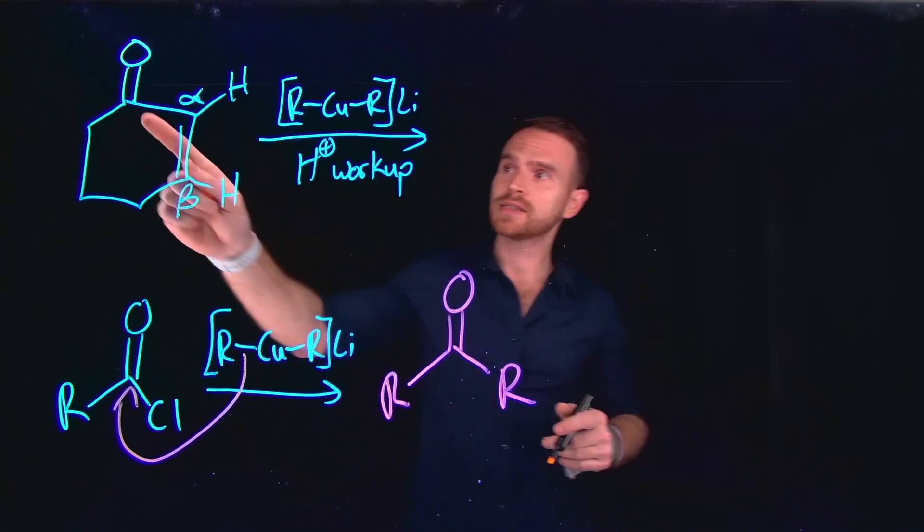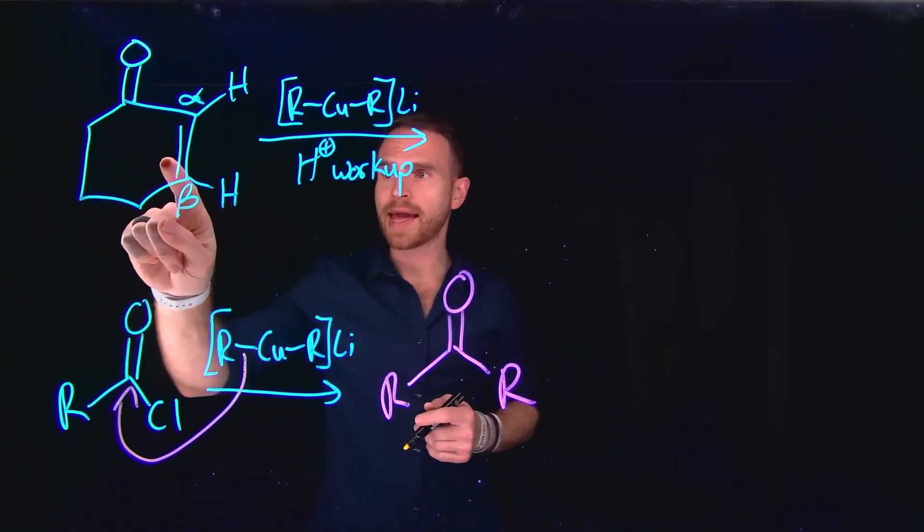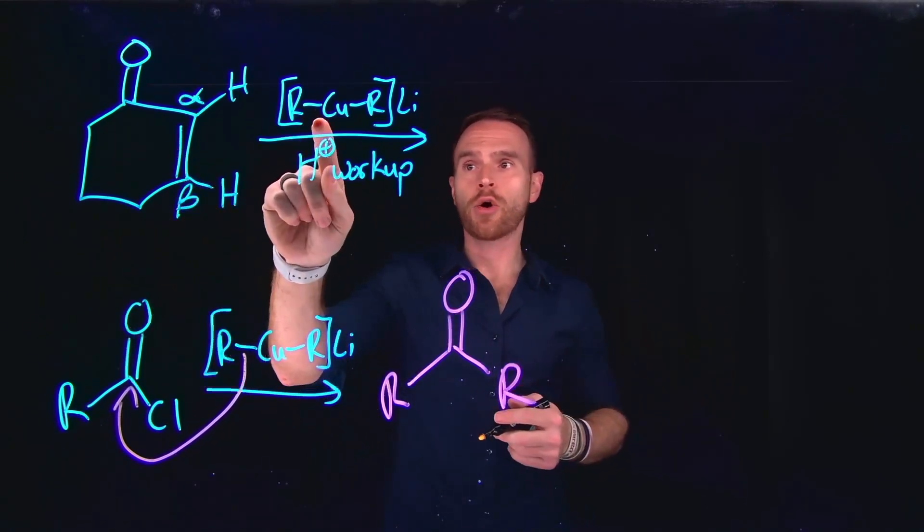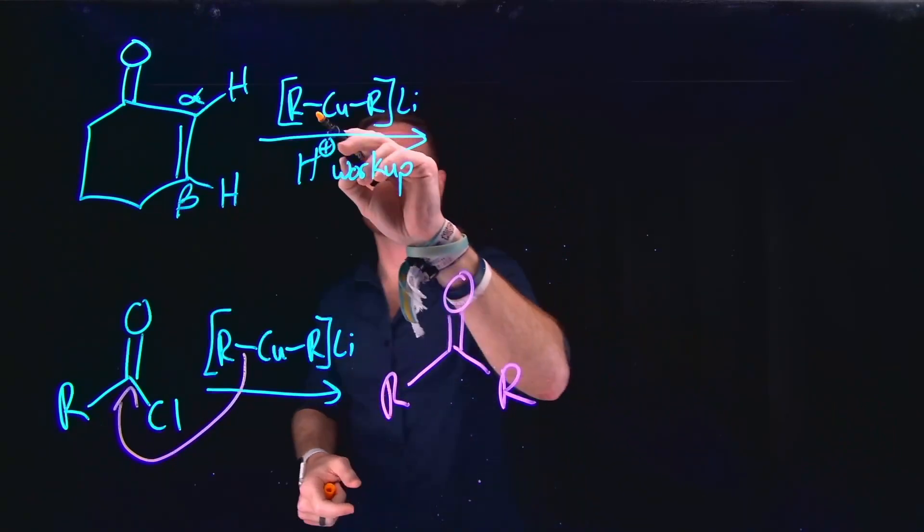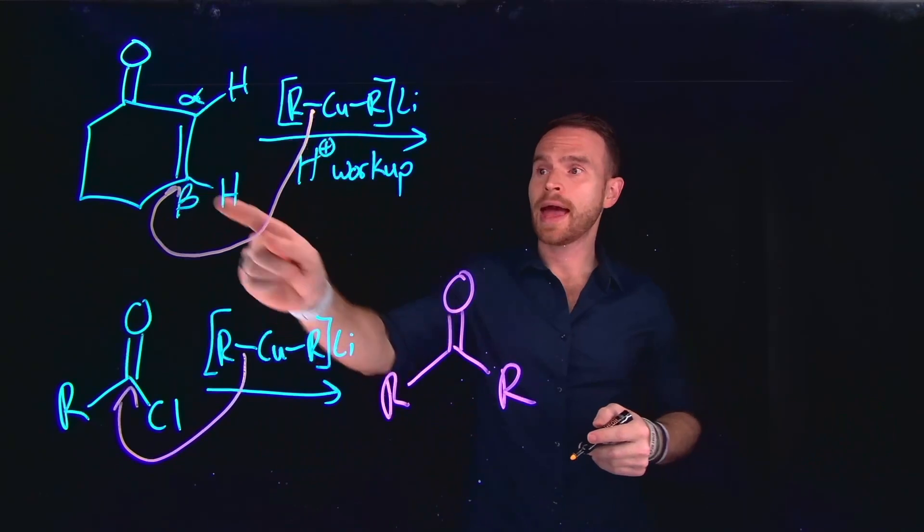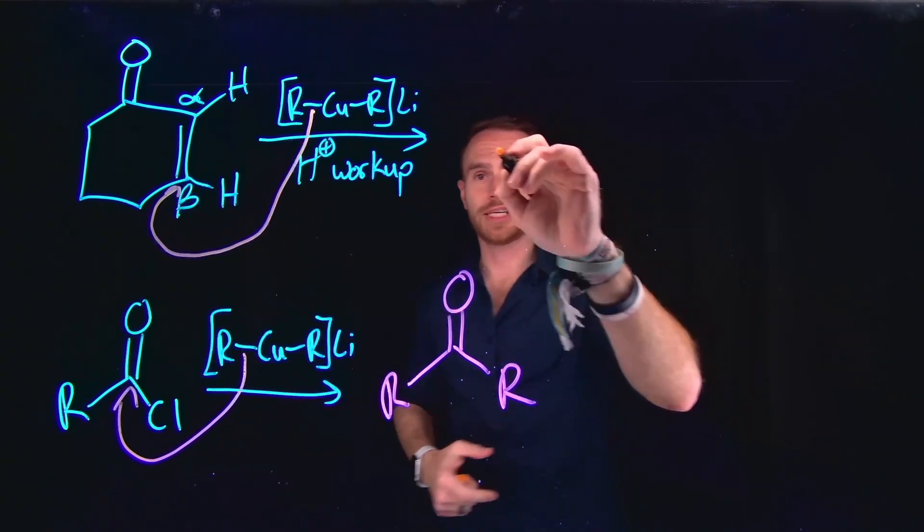And what this means is that if we have a situation where we have a ketone and an alkene, what will happen is that since this organo-cuprate is slightly less nucleophilic compared to a Grignard reagent, rather than adding at the carbonyl-carbon position, this will actually add at the carbon of the alkene. This is called a 1,4 addition.